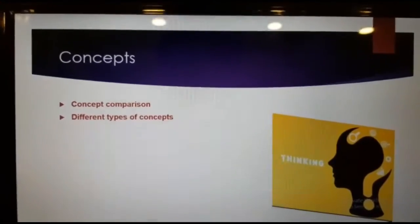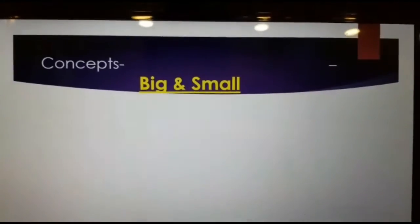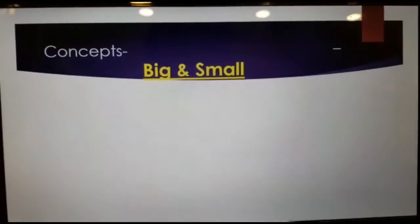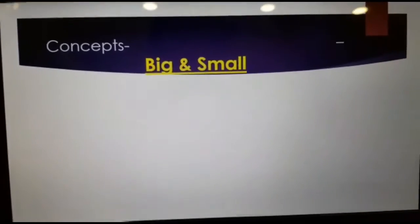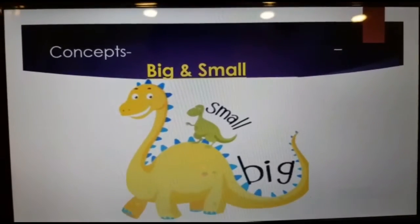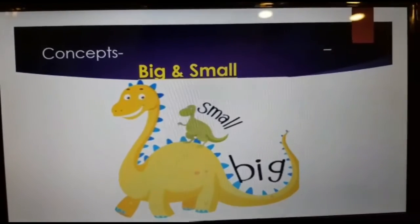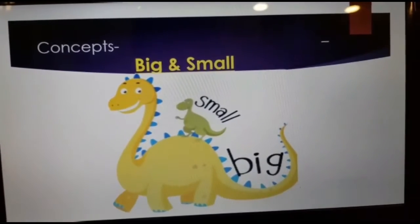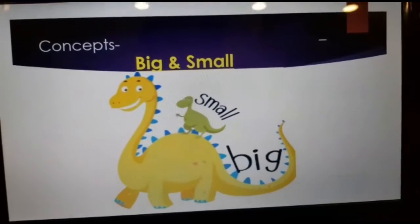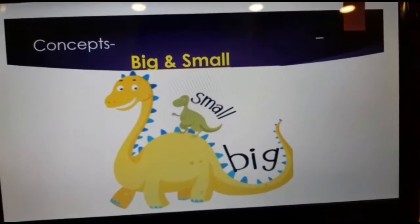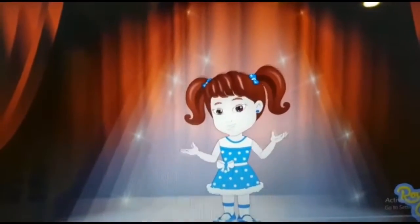We have some different types of concepts, so let's see what they are. The first one is big and small. Now let's see the difference we have here. I see two dinosaurs — one is yellow and one is green. The yellow one is big and the green one is small. Let's see a short video for the big and small concept.